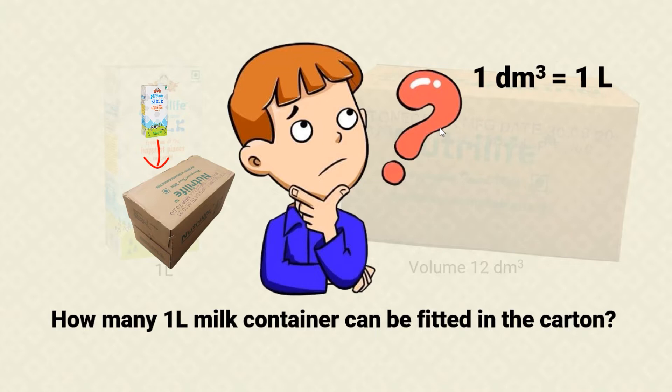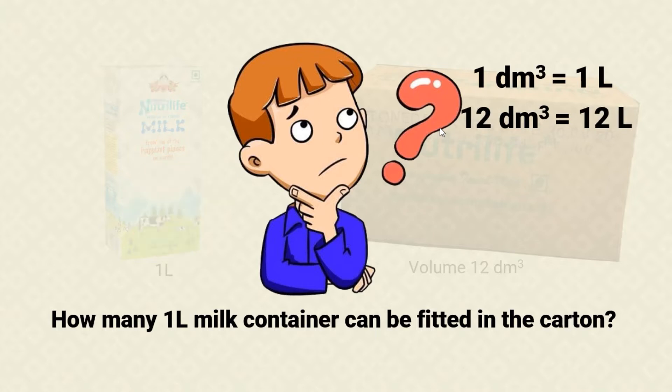The relation is: 1 cubic decimeter is equal to 1 litre. Therefore, 12 cubic decimeters is equal to 12 litres.